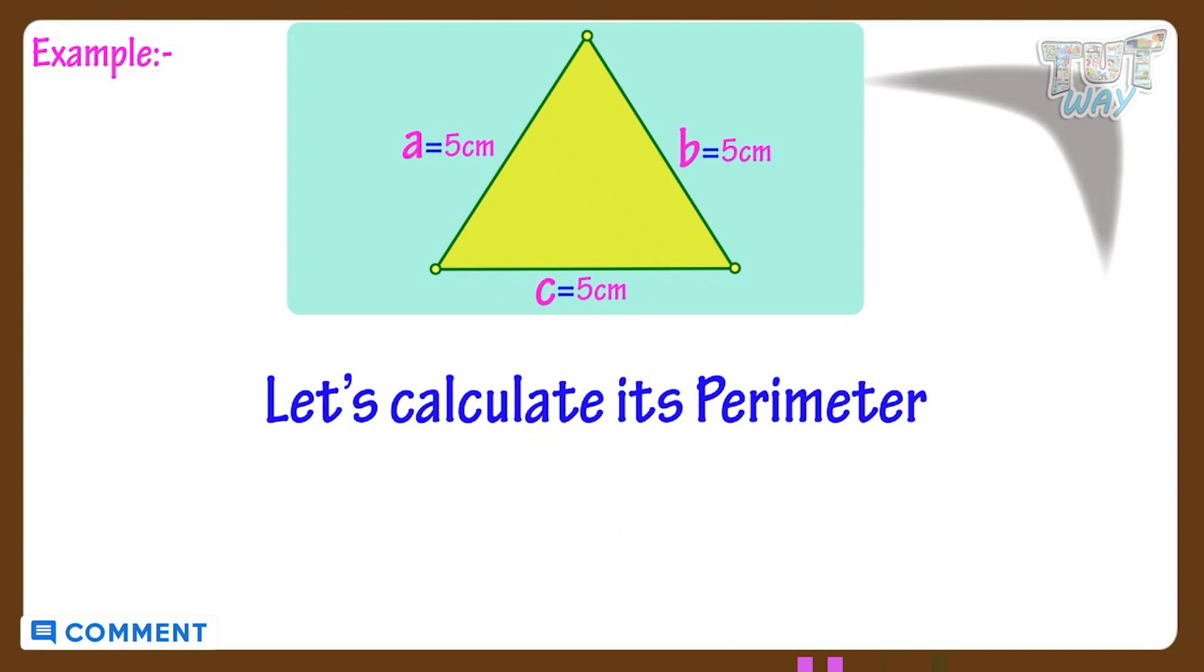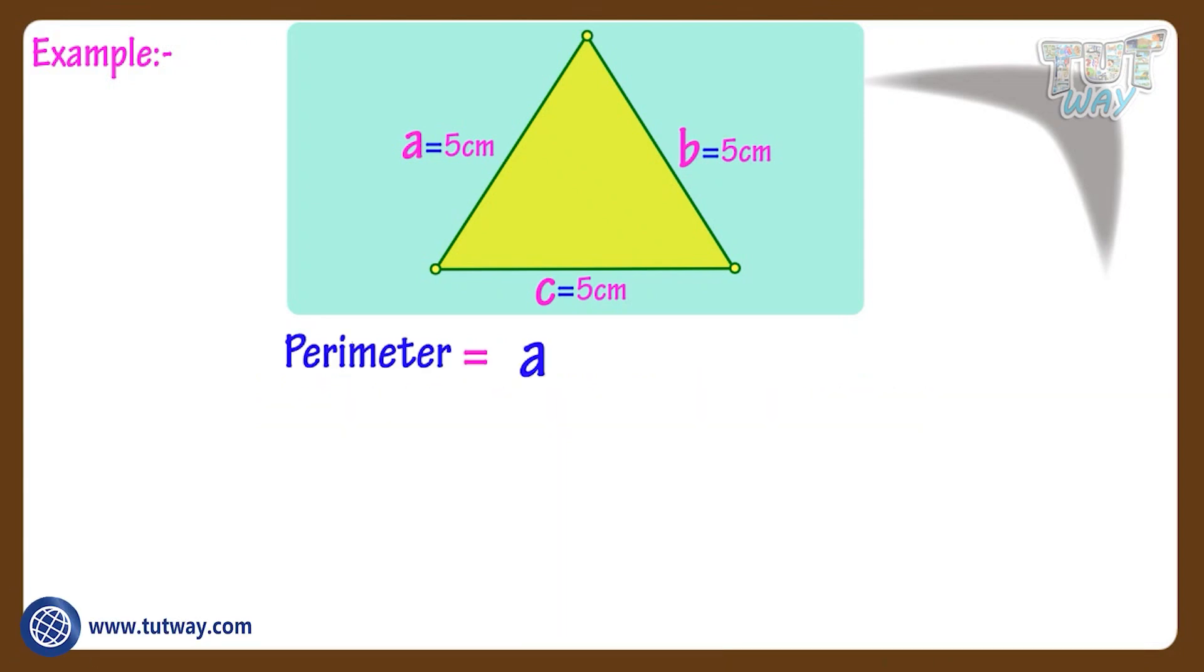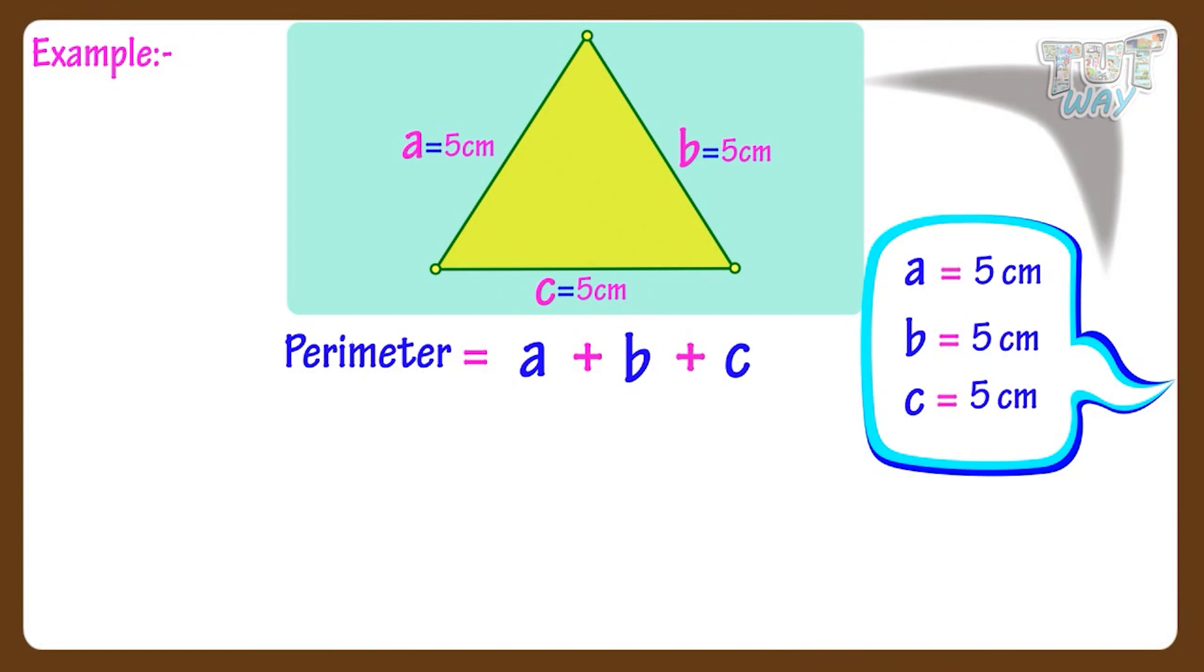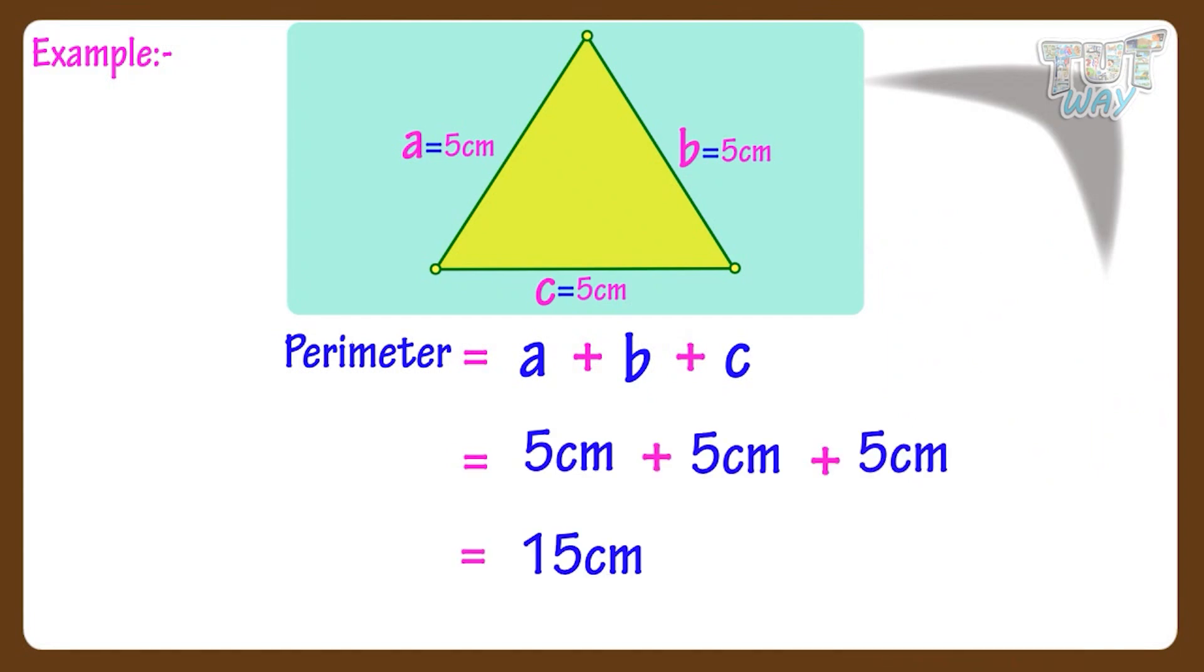Let's take an example. Here we have a triangle with the lengths of its sides mentioned. Now, let's calculate its parameter. We know parameter is equal to A plus B plus C. Here A, B and C are lengths of sides of the triangle. Here A, B and C equals to 5. That is, all sides measure 5 centimeters. So parameter is equal to 5 plus 5 plus 5 equals 15 centimeters.